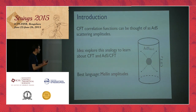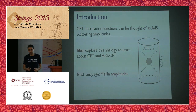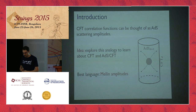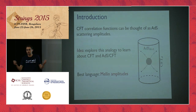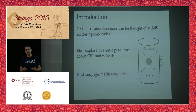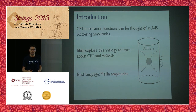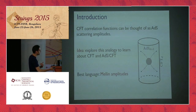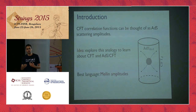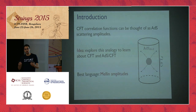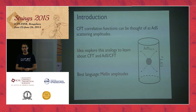You should think of correlation functions of the dual CFT as ADS scattering amplitudes, but in position space this looks very different. The idea — and that's what I want to convince you — is that if you write these correlation functions in Mellin space, then this analogy becomes very transparent. Moreover, you can use this analogy to guide your search and to learn more about conformal field theory.